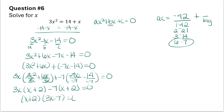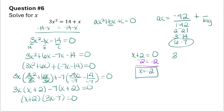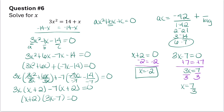Setting each factor equal to 0: x plus 2 equals 0, subtracting 2 from both sides gives x equals negative 2. Setting 3x minus 7 equal to 0, adding 7 to both sides gives 3x equals 7, then dividing both sides by 3 gives x equals 7 over 3. So those are the two solutions.